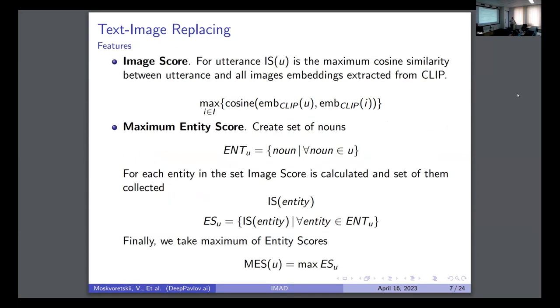So next, I would like to talk a bit about features that are key in our model. I think it is very important because it shows how the model could understand if the text is replaceable with an image or not. So the first feature is very simple. It's the maximum cosine similarity between the utterance embedding and an image taken as CLIP embeddings. The second one is also quite simple, but a bit more complicated. First, we extract every noun from an utterance, and then each noun is scored with the image scores. Then we take the maximum of this. What we want to do with this feature is we want to say if there is some entity in the utterance that could be represented with an image very well.